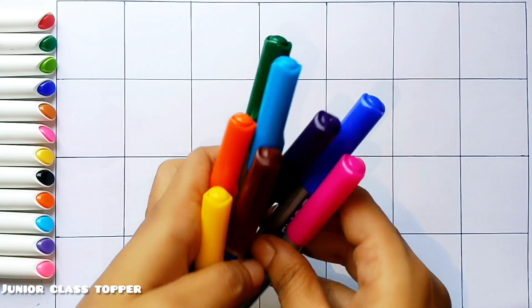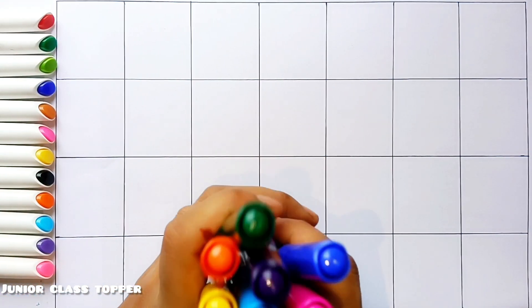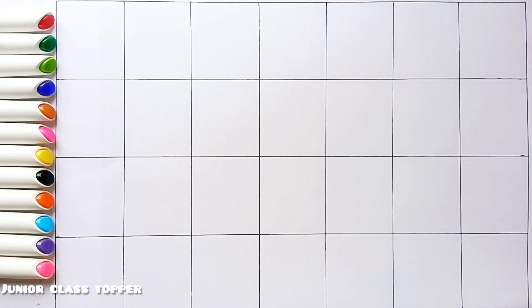Let's try to learn the alphabet. A to Z. A, B, C, D. Let's start.